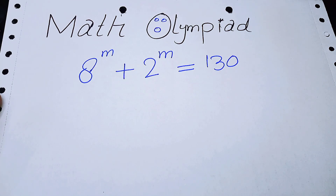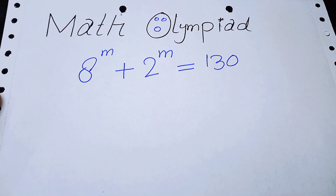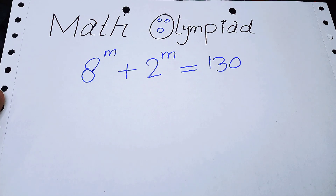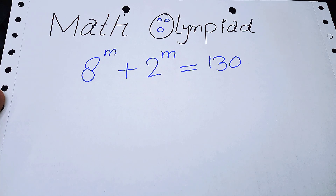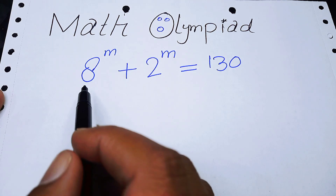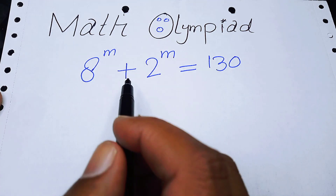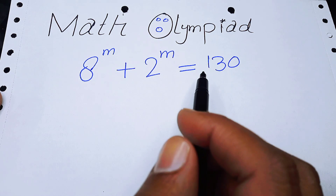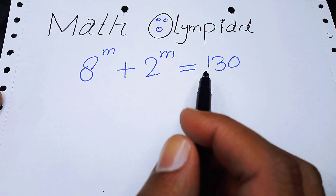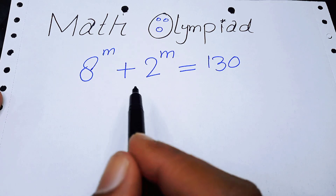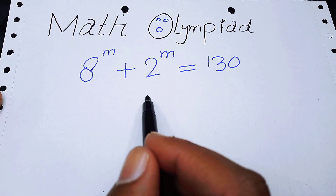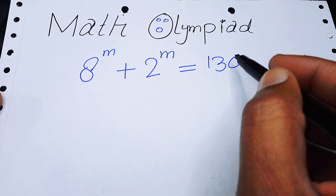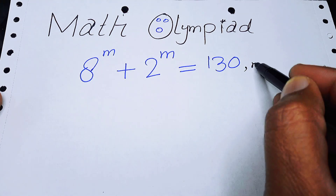Hello everyone, welcome back to the Map of Mathematics. In this video we are going to solve this nice algebra problem: 8 to the power of m plus 2 to the power of m is equal to 130. We will solve this exponential equation for the real value of m.